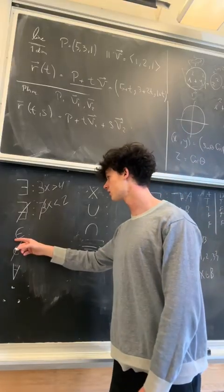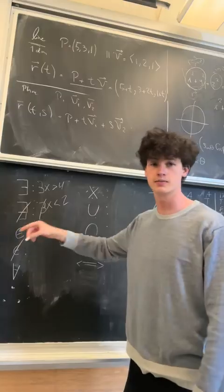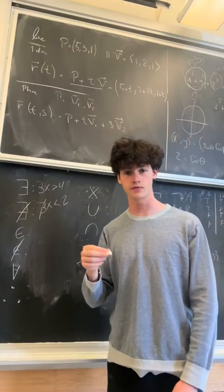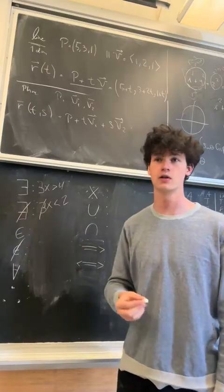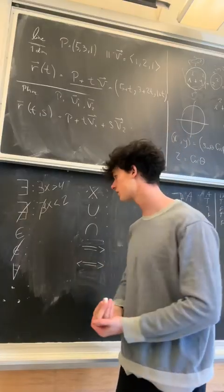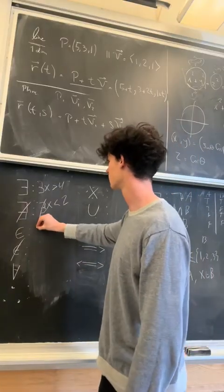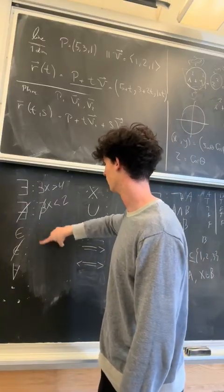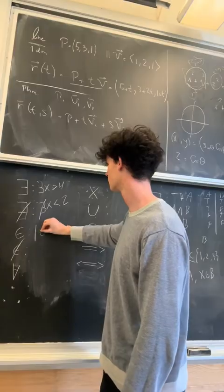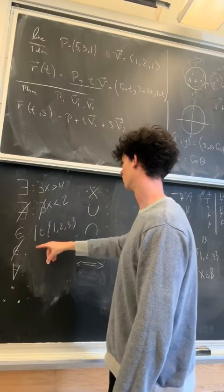For this next one, this little epsilon here, this means is an element of. So if you have an object, and it's an element of something else, if it's an element of a set, if it's in something else, then you would use this little symbol and say it's an element of. So if we have two sets, these little brackets mean sets. We'll say one is an element of the set {1,2,3}. So one is in the set.